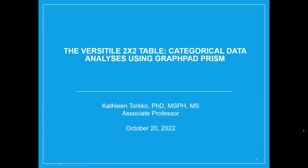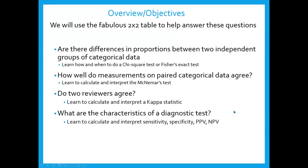Thank you everybody for joining today. I'm sure this is hardly an exciting title, but I often call this the fabulous two-by-two table because you can boil a lot of analyses down — it's a very versatile tool. Today we're going to look at a subset of analyses: how there's a difference in proportions between two independent groups of categorical data, and we'll use a chi-square or a Fisher's exact test to test the difference. I'll tell you when to use either and how to do them in Prism.